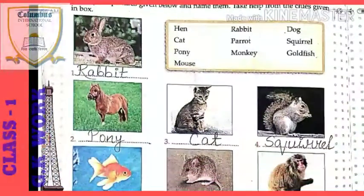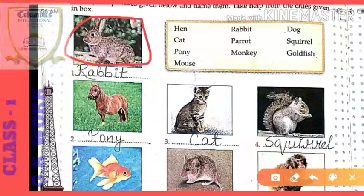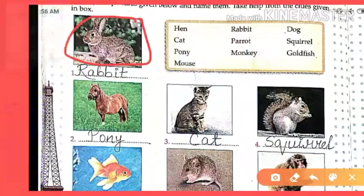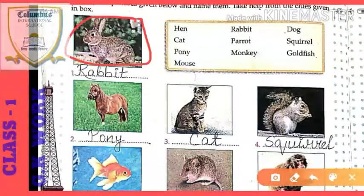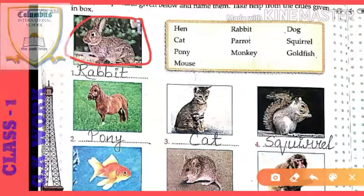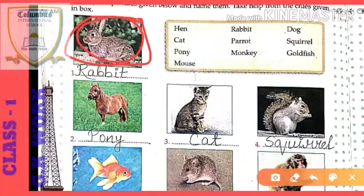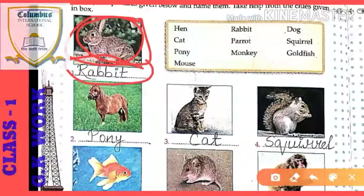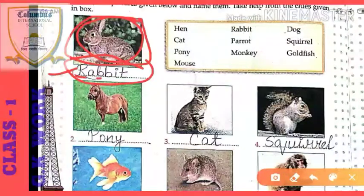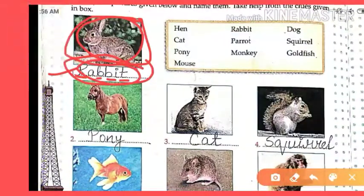Let's start with the first one. There is a picture of an animal — which type of animal is this? Can you identify it? Have you ever seen this type of animal — at home, in the neighborhood, or anywhere? I hope all of you have seen this animal. This animal is called a rabbit. The spelling is R-A-B-B-I-T.